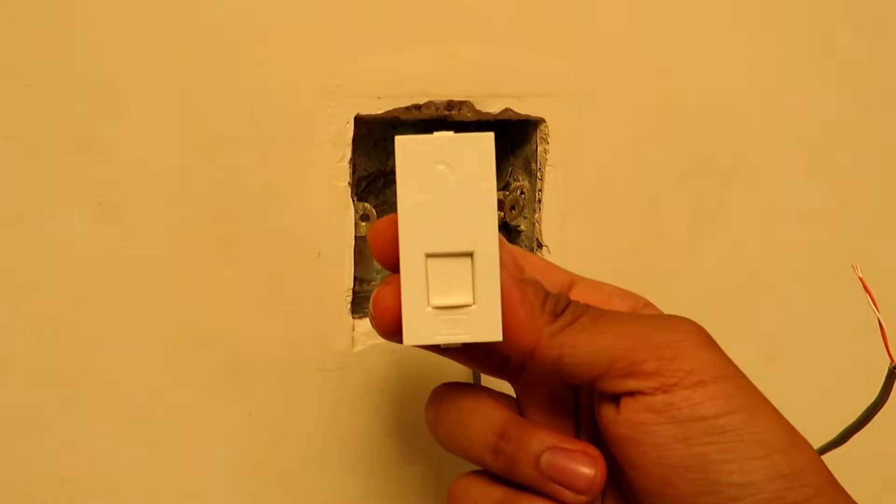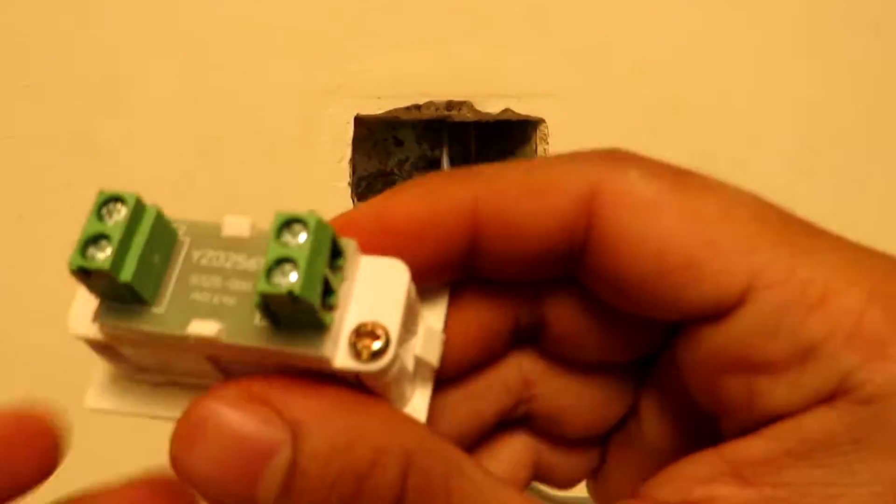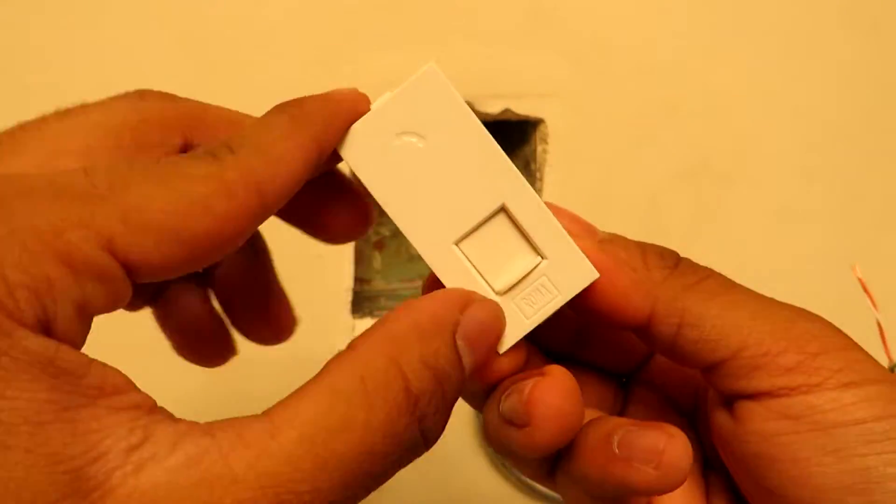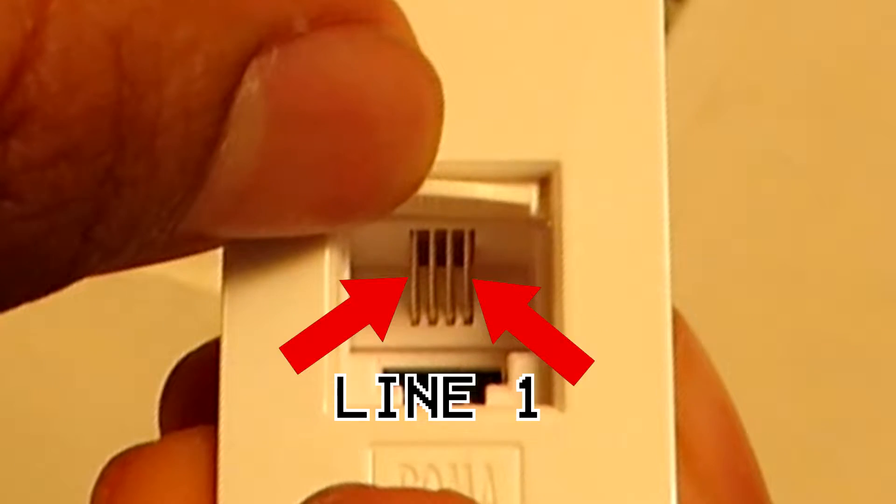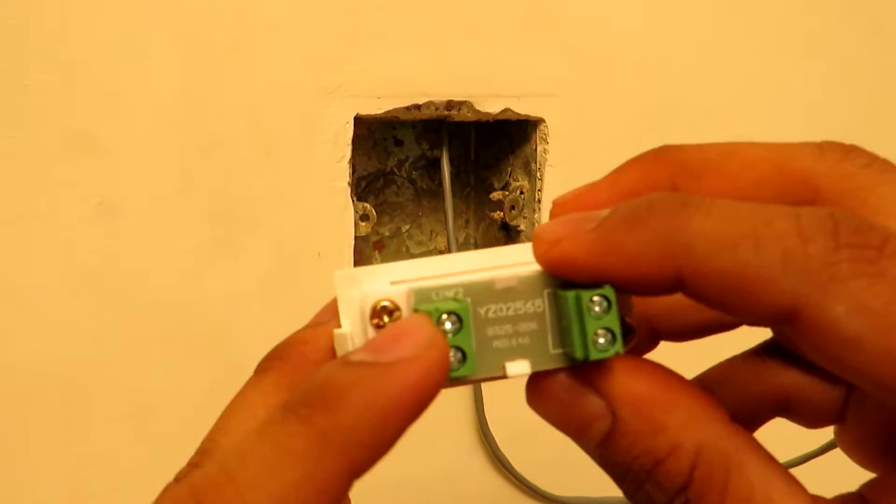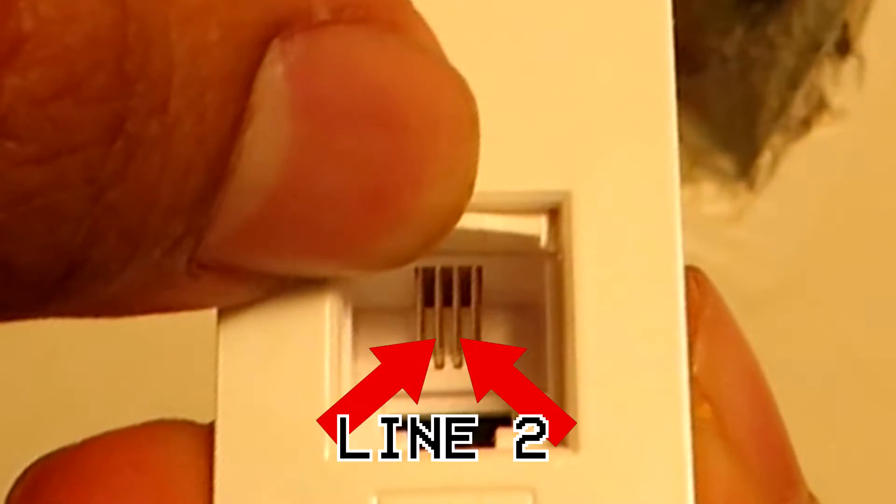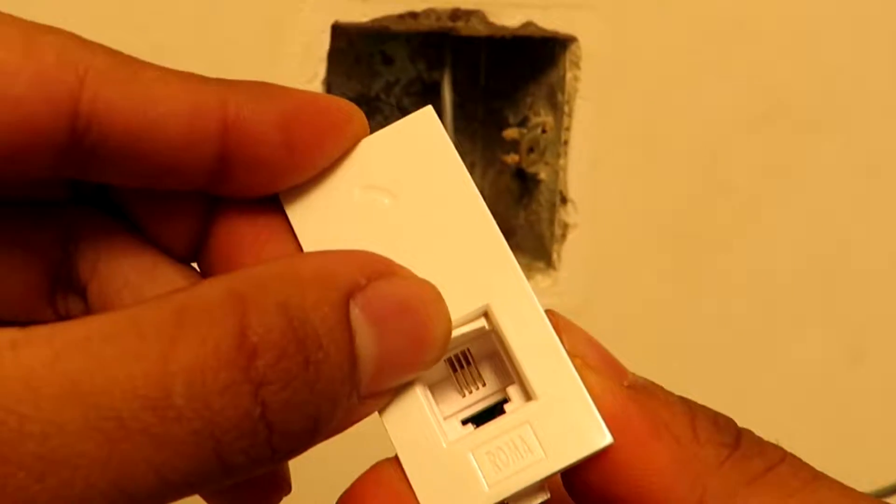This is our brand new Roma telephone socket and you can see that there are two lines labeled here clearly. If you look at line number one, it is actually the second line. If you see the pinout of an RJ11 connector, they connect to the outer two pins. Line number two is actually the main active line which connects to the center two pins. We should make our connection to line number two.